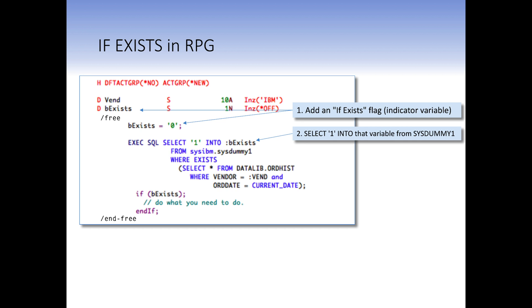So this will select the number one as a character string or asterisk on, if you will, into that host variable. It'll do so from the IBM supply table sys dummy one, which is in the sys IBM library. This file has one row in it and its only purpose is to be used in selection statements like this one, where you just want one row to be returned.